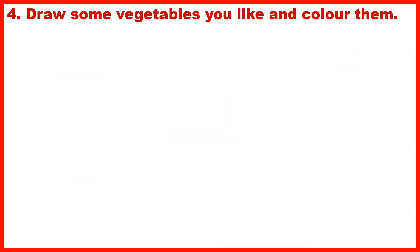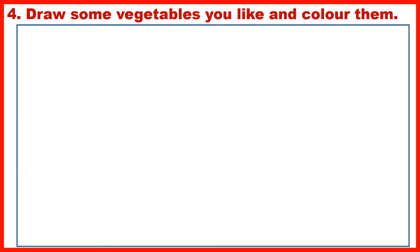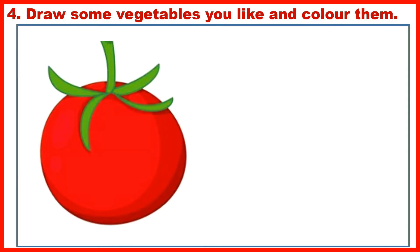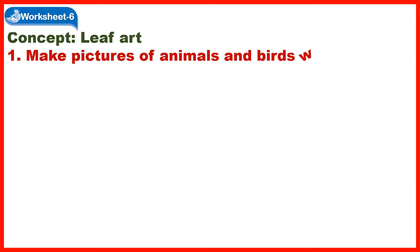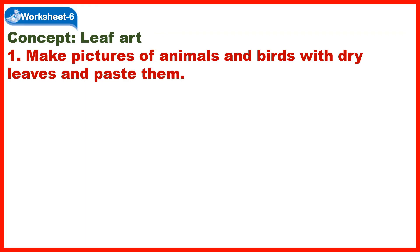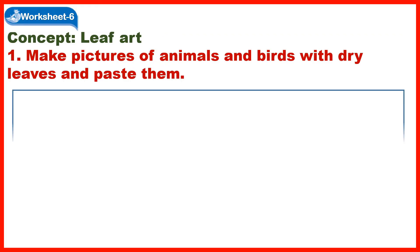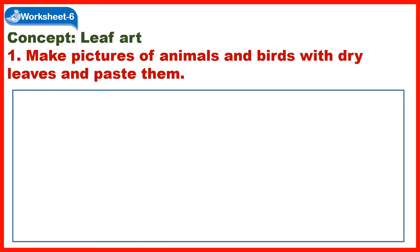Section 4: Draw some vegetables you like and colour them. Section 5: Make pictures of animals and birds with dry leaves and paste them.